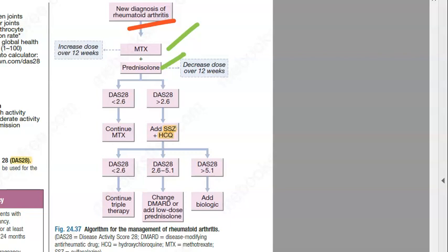If the score is less, then you will just continue whatever you have given, methotrexate. If the score is more, you will add SSQ, that is sulfasalazine, and then hydrochloroquine. It's written here if you want to see sulfasalazine and hydrochloroquine. Then what you will do, you will again continue and check.